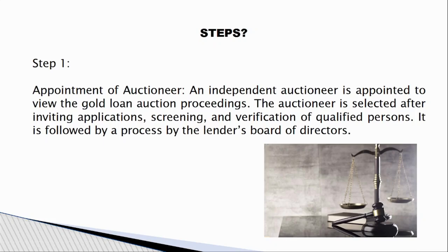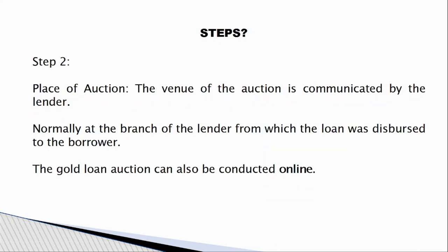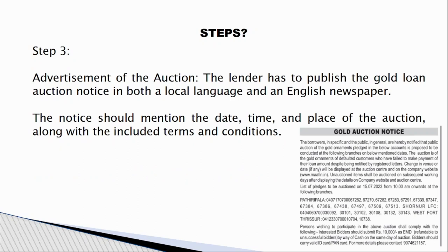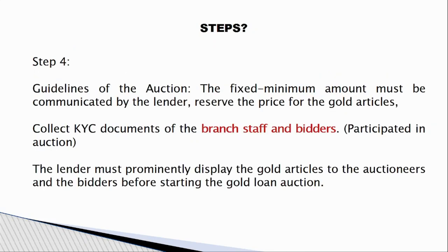Step two: the auction place is decided. Normally, the auction happens at the same branch where the loan was disbursed, but it can also be conducted online. Step three: an auction advertisement is published in both English and local language newspapers, mentioning the person's name, gold amount, auction date, time, place, terms and conditions, and guidelines.